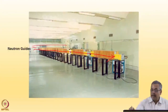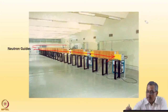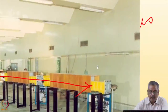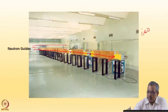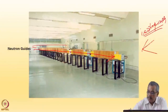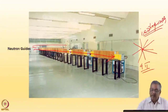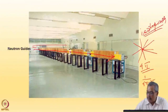Neutrons are neutral and come out isotropically from the reactor core, so there is no directionality — every point of the reactor core behaves like a 4π source. The fall of intensity will be 1 over 4π r squared. If you go 5 meters, or 500 centimeters, the flux falls by a factor of 10 to the power minus 7.